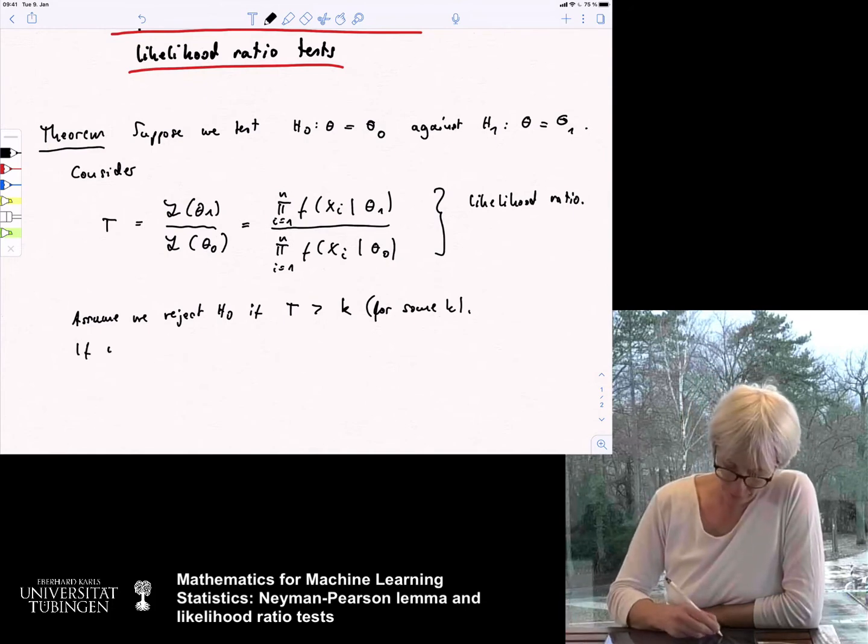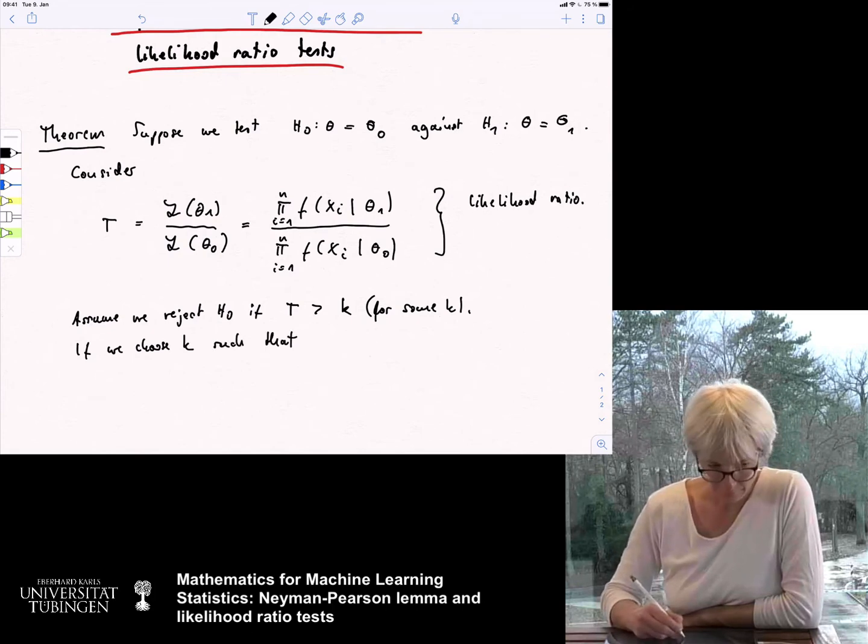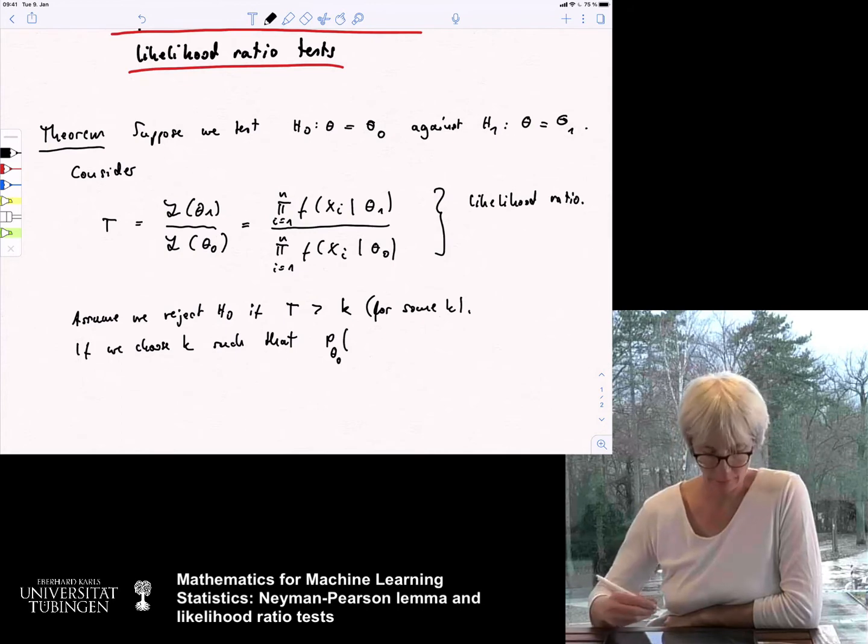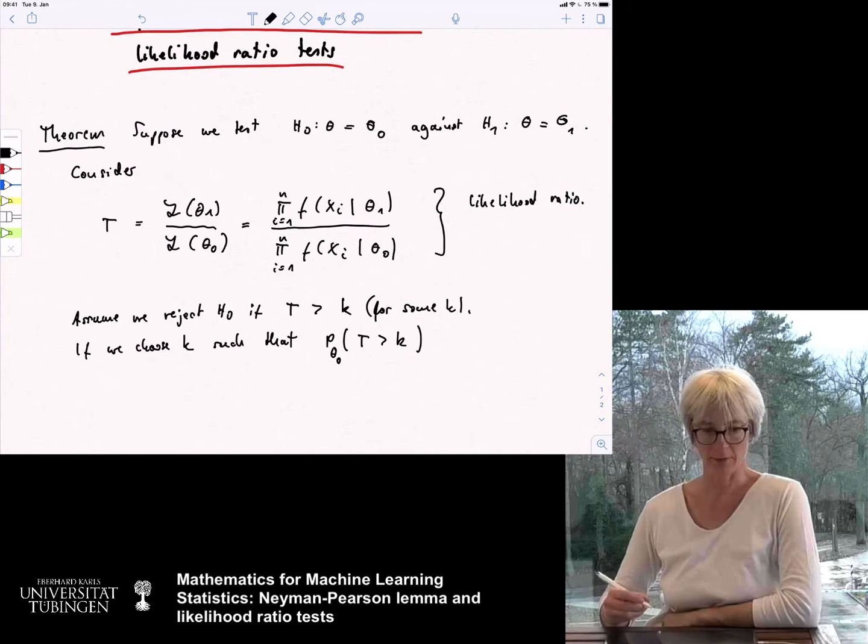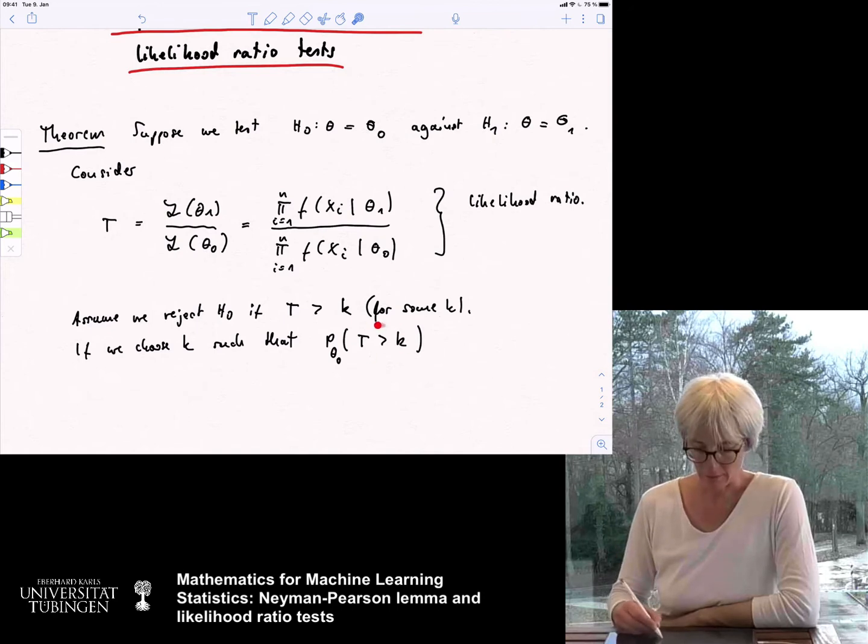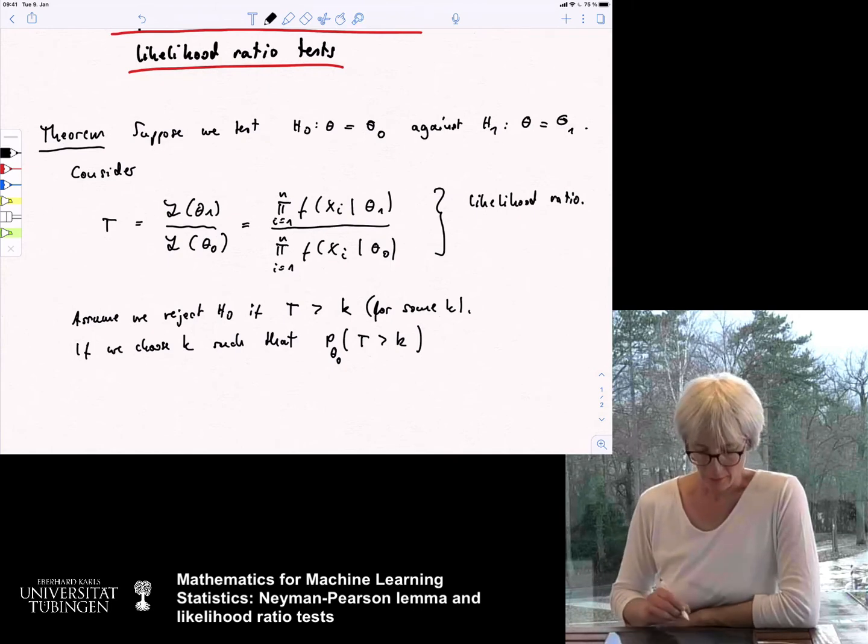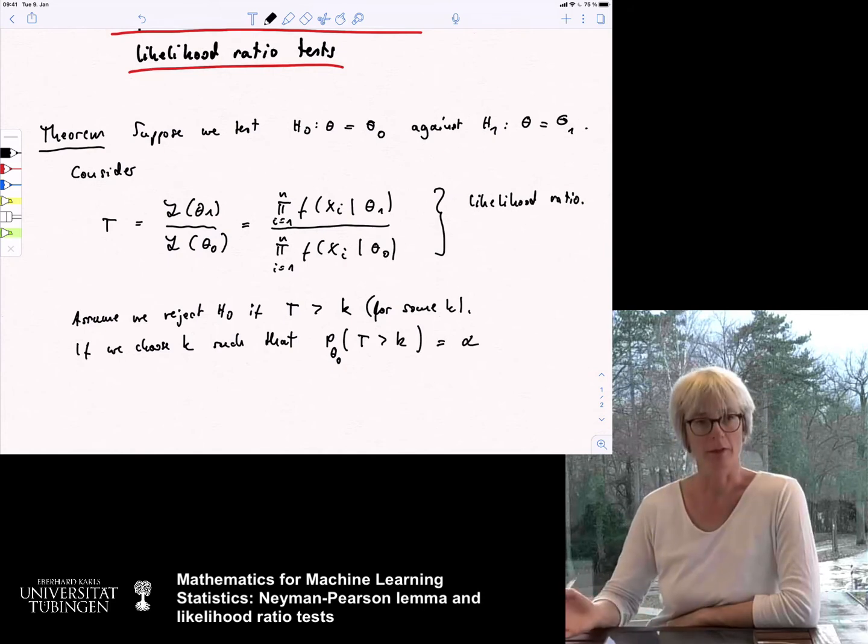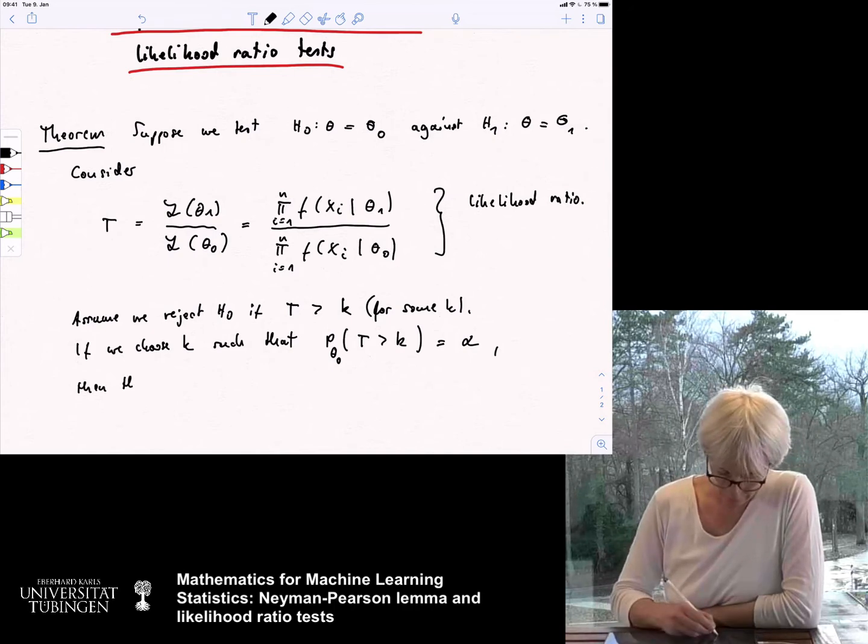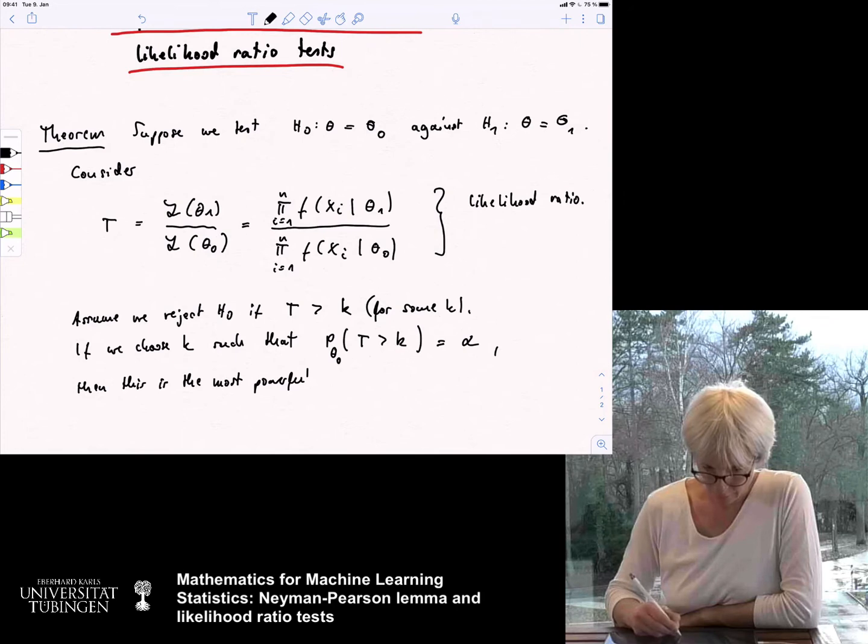And now, the question is, how do we need to choose k? Now, if we choose k such that, now we fix the level. Namely, we want to know that under the null hypothesis theta 0, the probability that T is larger than k, so this is when the type 1 error occurs. We are, if the true parameter is theta 0, but we end up in our rejection region, when the statistic is larger than this k. If we choose k such that this is alpha, so this is now the level. Then, this is the most powerful level alpha test.